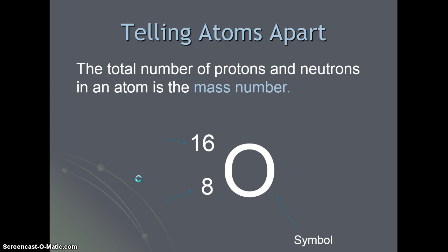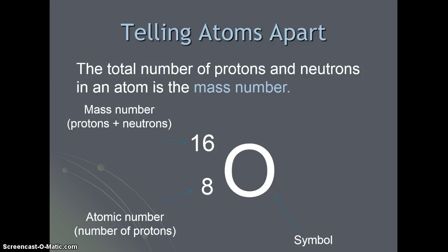We can also tell atoms apart based on their mass number. The total number of protons and neutrons is the mass number. And in this particular representation, it is on the left upper corner next to the element symbol. Below that is typically the atomic number, which we now know is the number of protons.